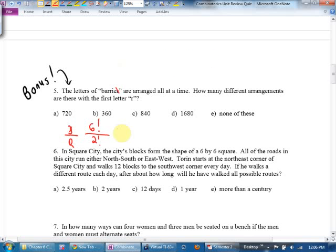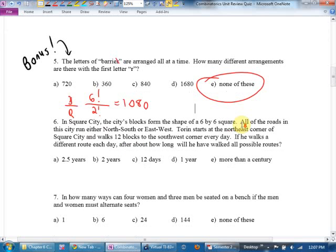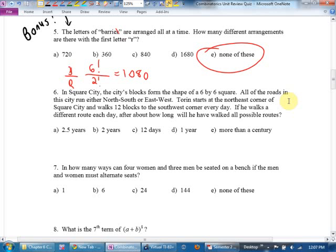Because I think that's a bit of a tough question. Which was, what did I say, 1,080? So I went with none of these. Sorry? What, if you just circled none of these? Then I guess you fluked out and get the right bonus mark. I'll talk about how well the marking works after. In Square City, the city's blocks form the shape of a six-by-six square. All the roads of this city run either north-south or east-west.